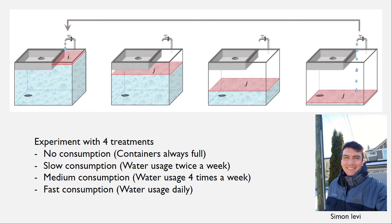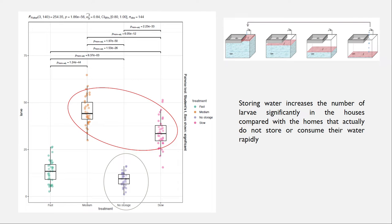To confirm this, my students in Montería ran entomological experiments with washing basins where water could be consumed at different rates — not storing water, storing a tiny bit consumed fast, consumed at a medium pace, or very slowly. Measuring larval densities across those treatments, we found that not storing water compared to storing water made a clear difference in the number of larvae in the system.